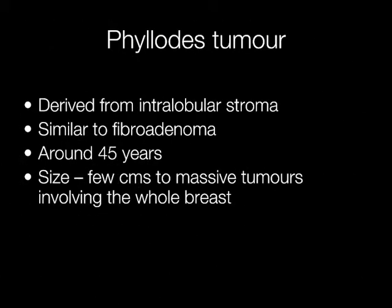Phyllodes tumours are derived from intralobular stroma, and it is the stroma that determines how the tumour will behave. They are similar to fibroadenomas and they tend to occur around the age of 45. The size may vary from a few centimetres to massive tumours involving the whole breast.